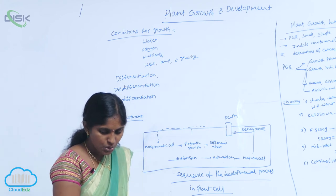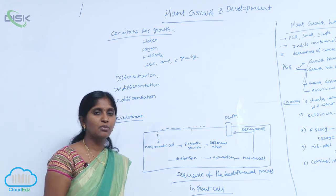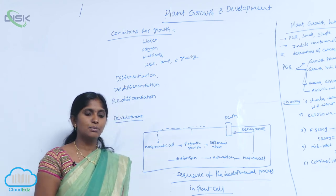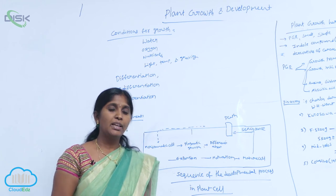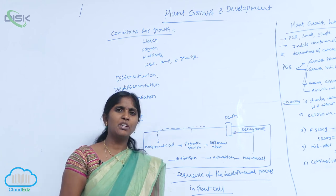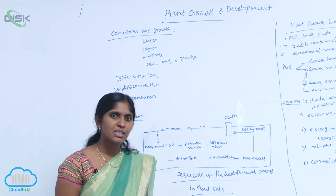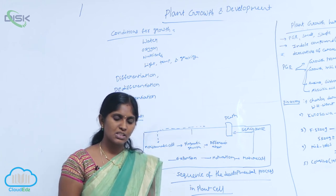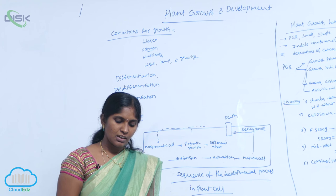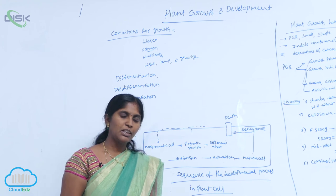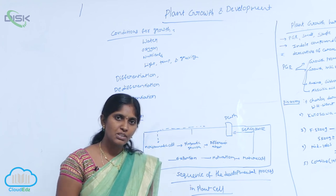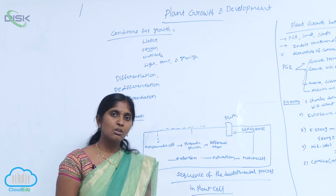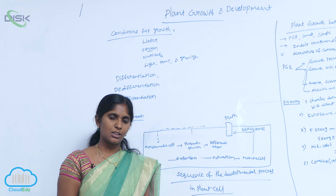The plant shows different pathways in response to the environment, and they produce different kinds of structures. The ability to produce different kinds of structures is called plasticity.